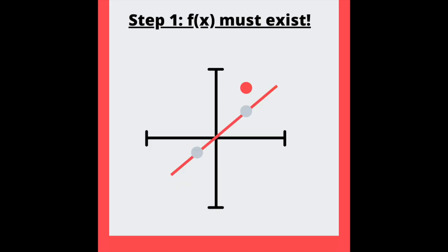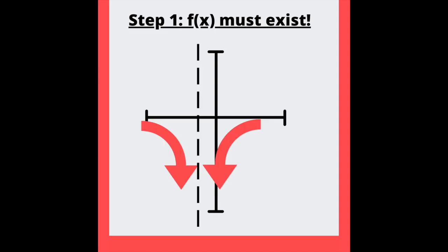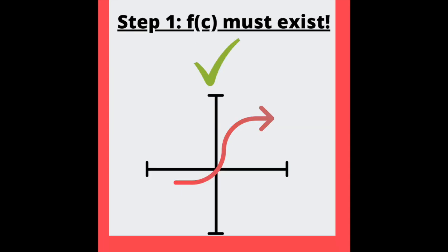Step one: f(x) must exist. First, check for holes — if you find an unfilled one, stop here, you are done. Next, check for asymptotes; if you see any, it's over. If none of the above, move to step two.